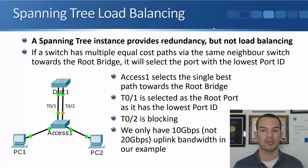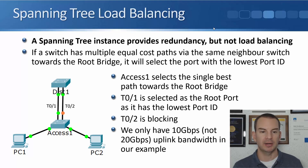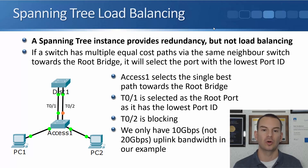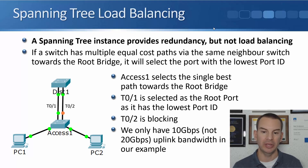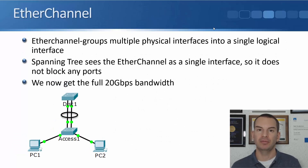If a switch has multiple equal cost paths via the same neighbor switch towards the root bridge, it will select one port — the one with the lowest port ID — and it's not going to load balance across all of them. In our example, we've got uplinks from the access 1 switch going to the distribution 1 switch with two 10 gigabit Ethernet interfaces, 0/1 and 0/2. Interface 0/1 will be selected as the root port as it has the lowest port ID, and 0/2 is blocking. So even though we've physically connected two 10 gigabit uplinks, we only get 10 gigs of bandwidth because spanning tree blocks one of those links.